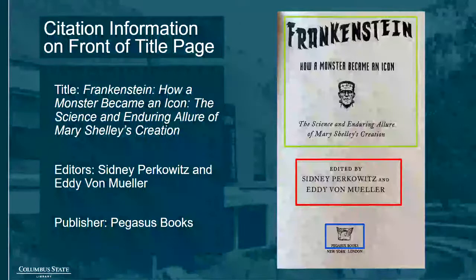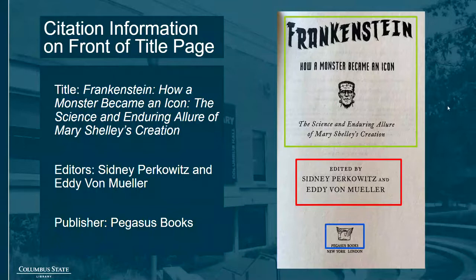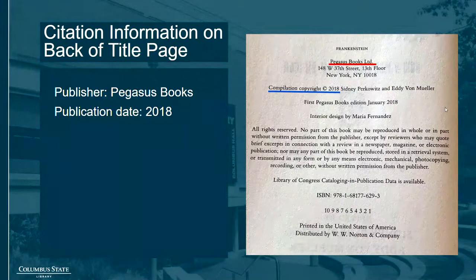You can start finding this information on the title page of the anthology. Here you can see the anthology's title, the names of the editors, and the publishing company. The anthology is Frankenstein: How a Monster Became an Icon — The Science and Enduring Allure of Mary Shelley's Creation. The editors are Sydney Perkowitz and Eddie Von Mueller, and the publisher is Pegasus Books. The back of the title page will give you the publication date, and if there's an edition number, you'll find it here as well. This anthology was published in 2018, and no edition number is given.